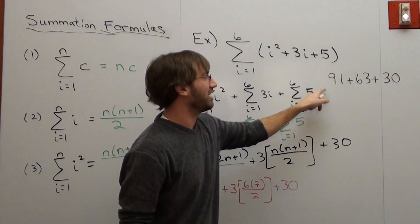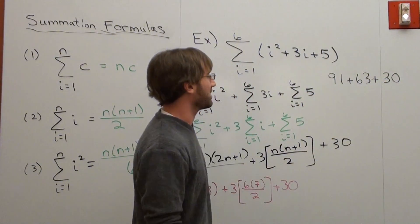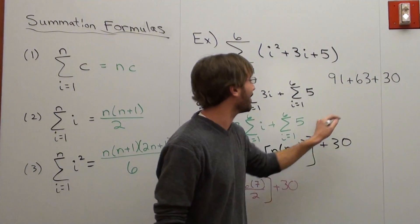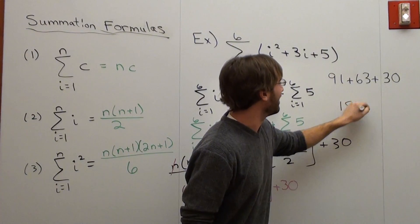Anyways, 91 plus 63 is 154. 154 plus 30 is 184. That's my answer, assuming I didn't do something wrong along the way, which I hope I didn't. I'm pretty sure I didn't, I double-checked it while I was talking.